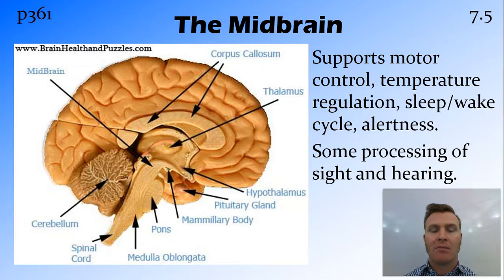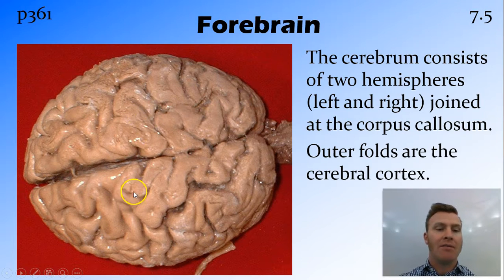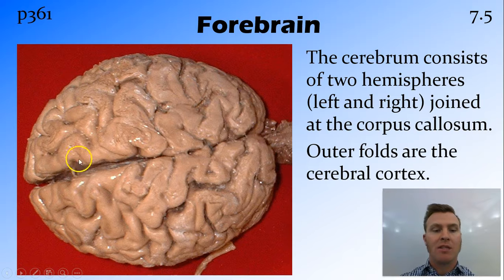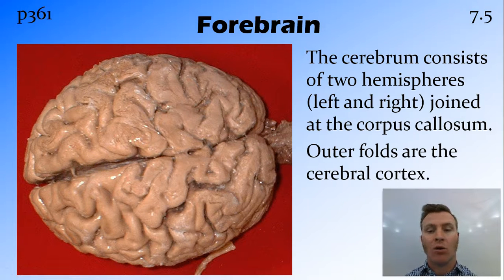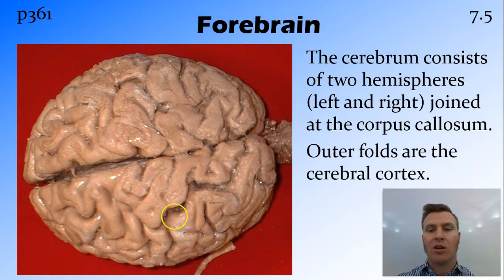The main part of those higher-order functions is done in the forebrain. The forebrain consists of two hemispheres — the left and right hemisphere — and these are joined at the centre at the corpus callosum. There's actually quite a large gap between these two hemispheres; it's only at the corpus callosum that the left and right hemisphere actually communicate. On the outside of the brain there are all these folds, and this is the cerebral cortex, where most of this higher-order function occurs.